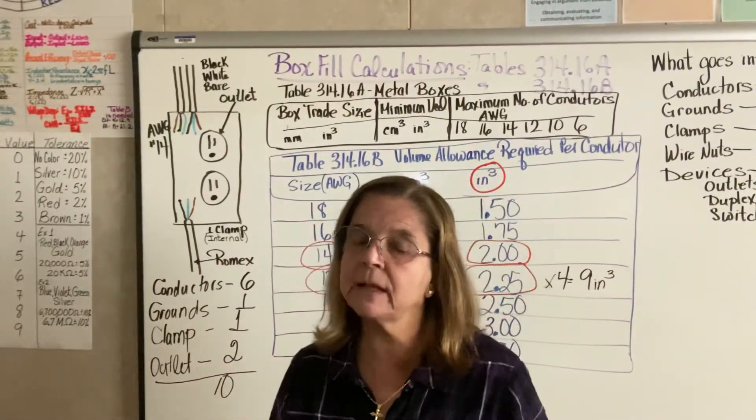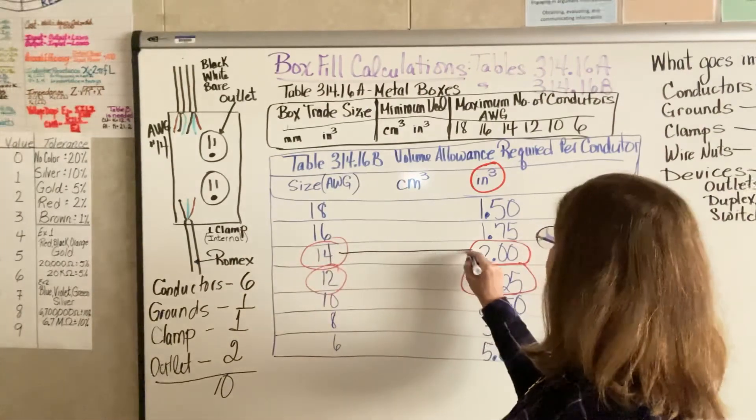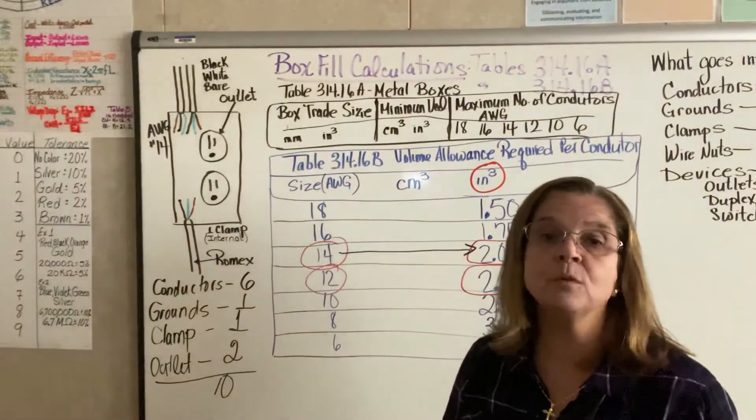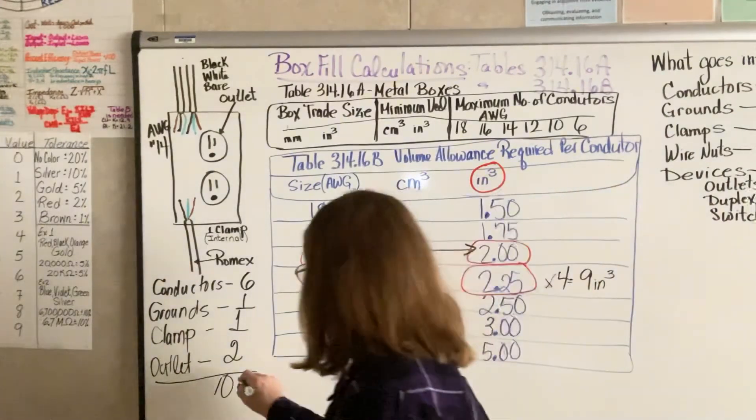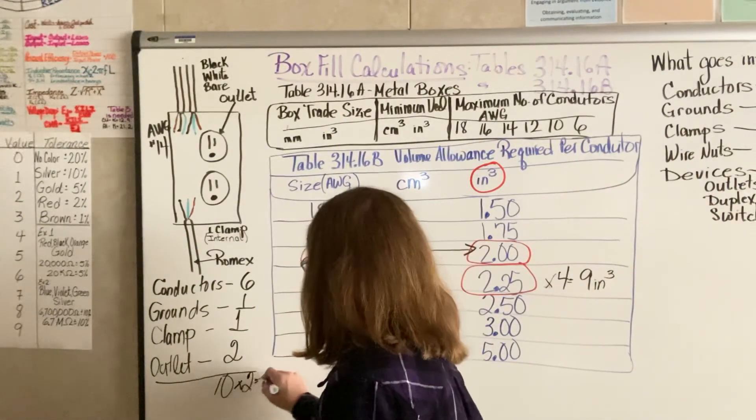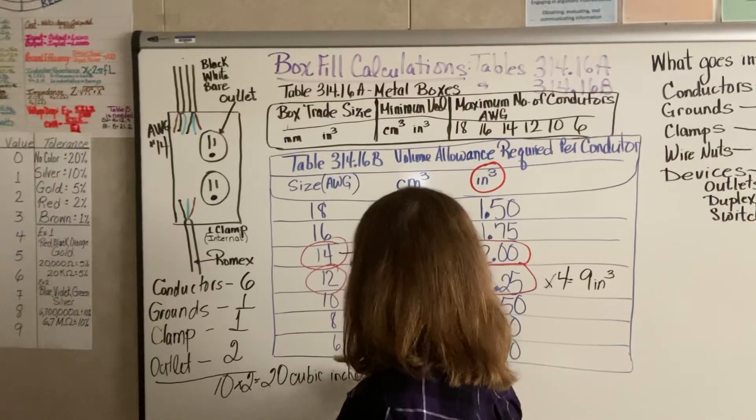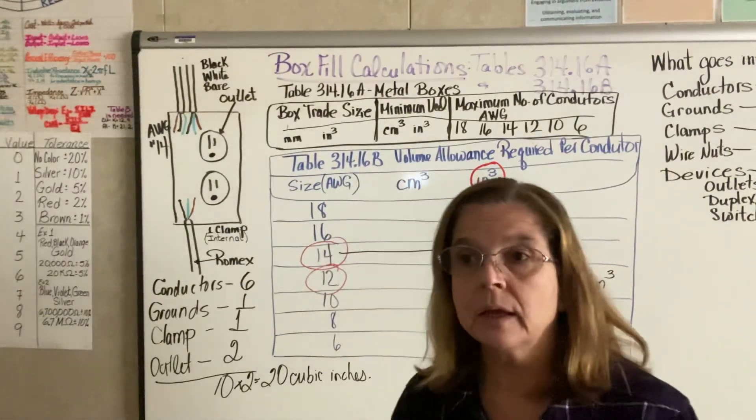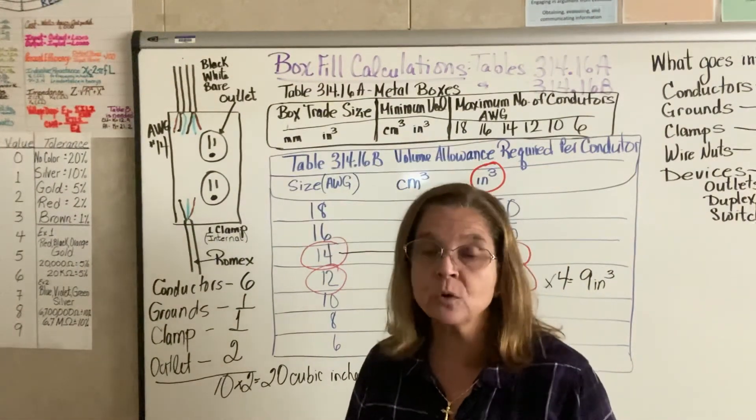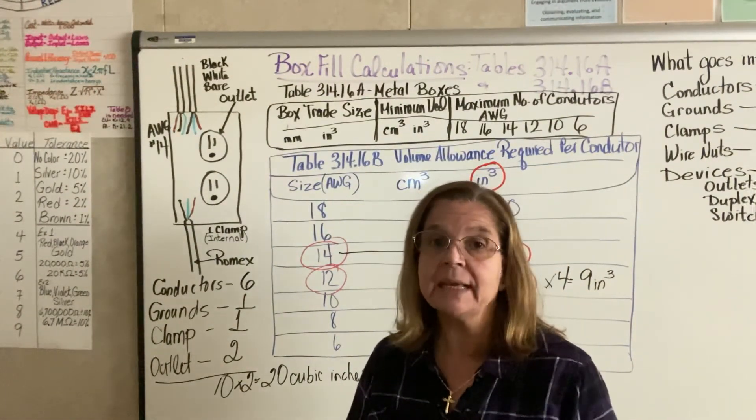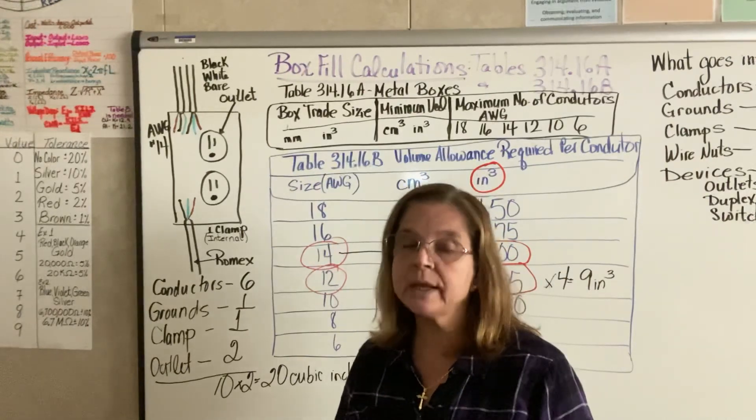Now, I still haven't figured out the volume. I go to table 314B, go to number 14 and I'm looking at the cubic inches. And over here the cubic inches says 2 cubic inches per conductor. So I do 10 times 2 and I have 20 cubic inches. So when I choose my non-metallic box I need to choose one that has more space than 20 cubic inches. If I pick 20 it's too tight.